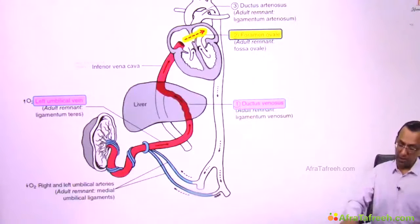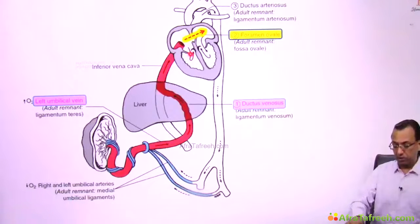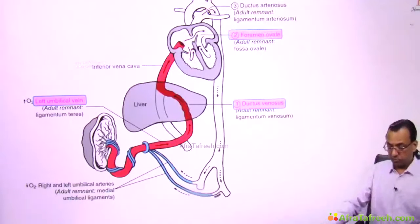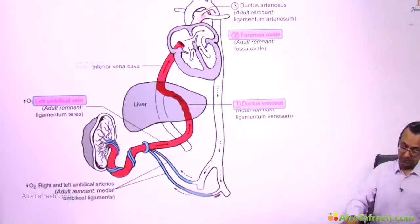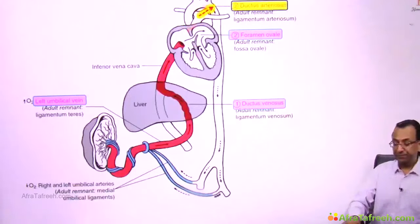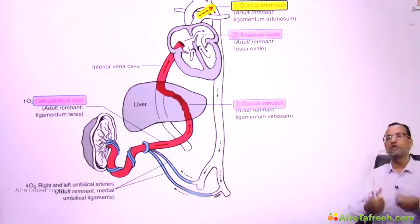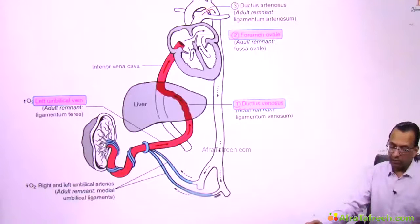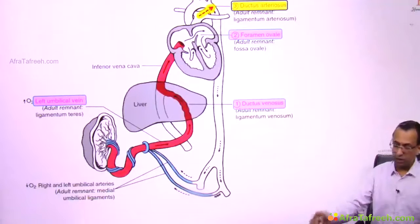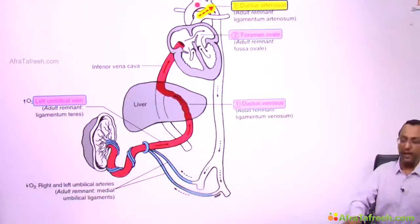What if some blood has already entered the right ventricle? That blood would normally go to the lung, but instead the right ventricle sends it toward the pulmonary trunk. The pulmonary trunk does not carry it to the lung — it uses a bypass channel called the ductus arteriosus. The pulmonary trunk sends this blood through the ductus arteriosus into the aorta.